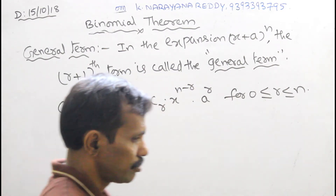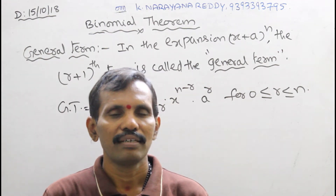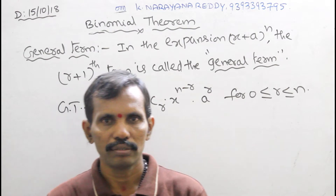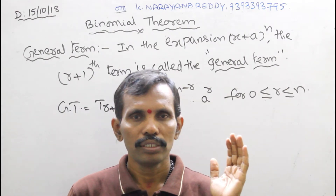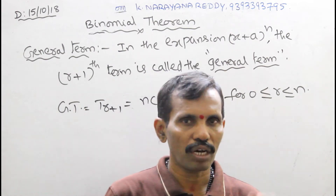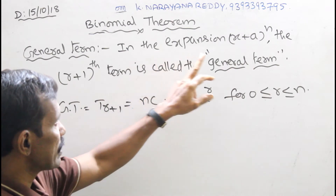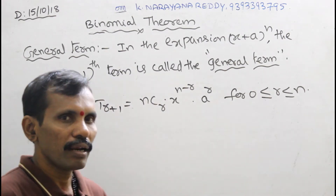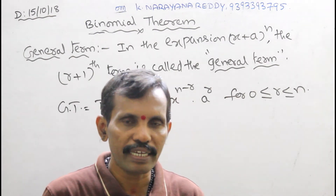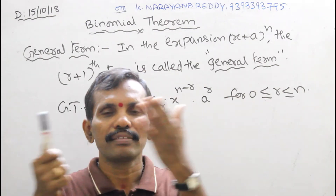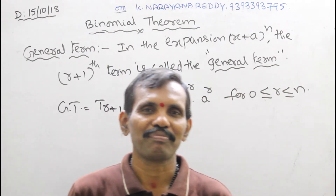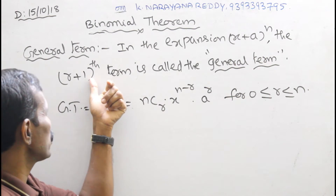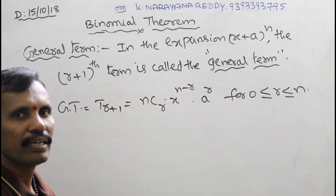General term — what is the general term? The general term is nothing but the required term: whichever term you want to find. So for that purpose we use this formula. In the expansion of x plus a whole to the power of n, the r plus 1th term is called the general term of the expansion.